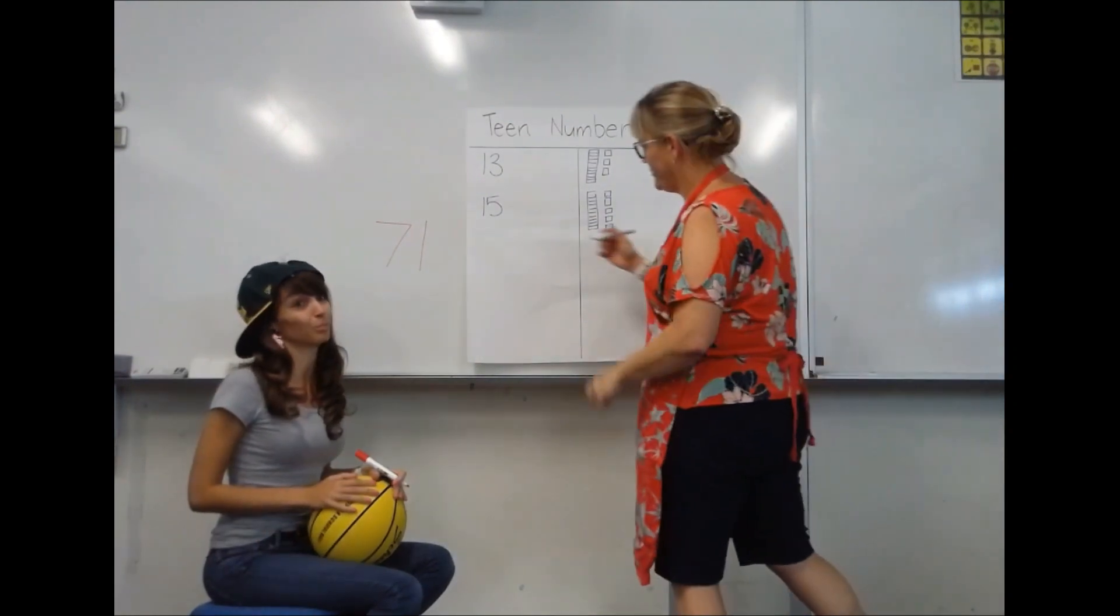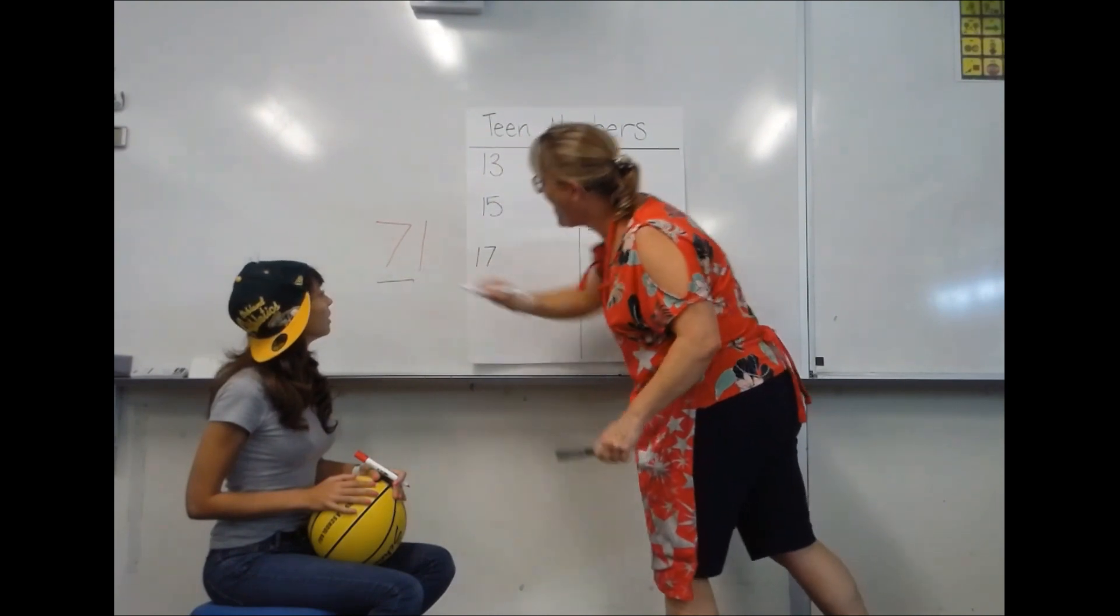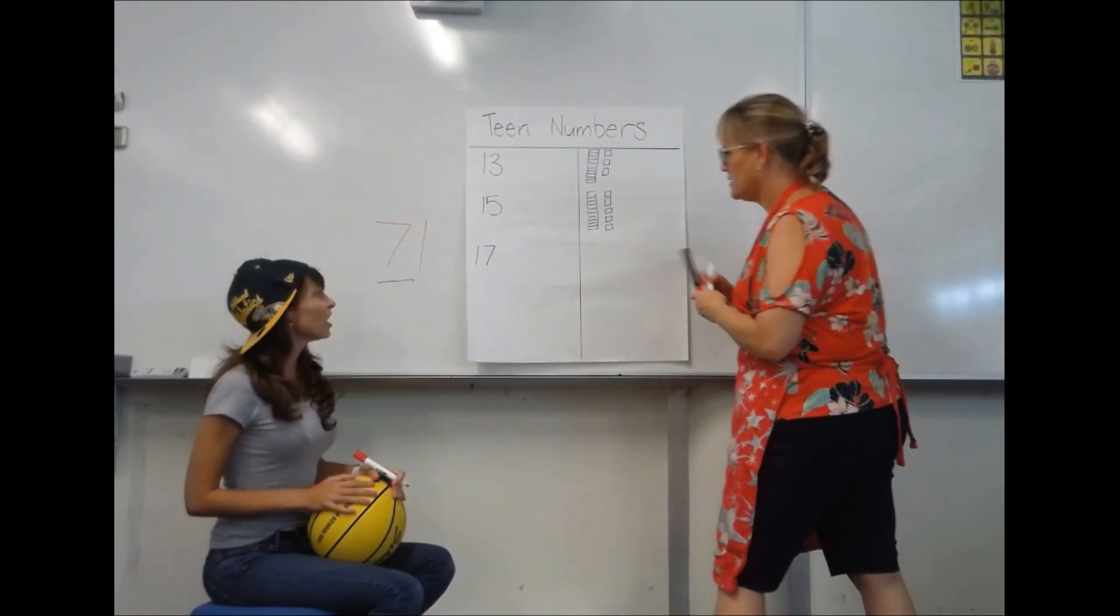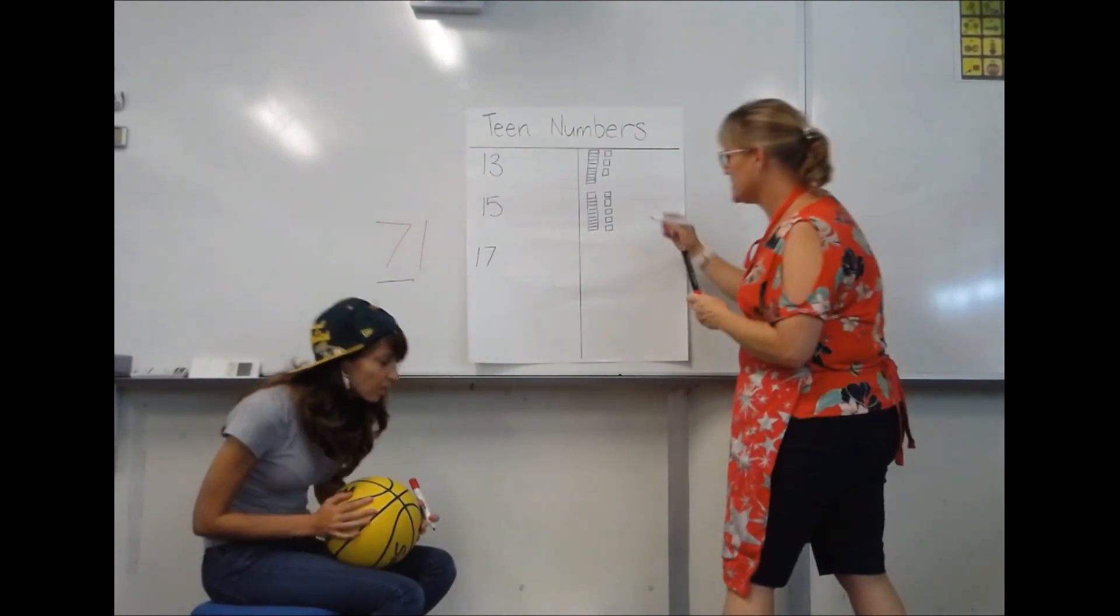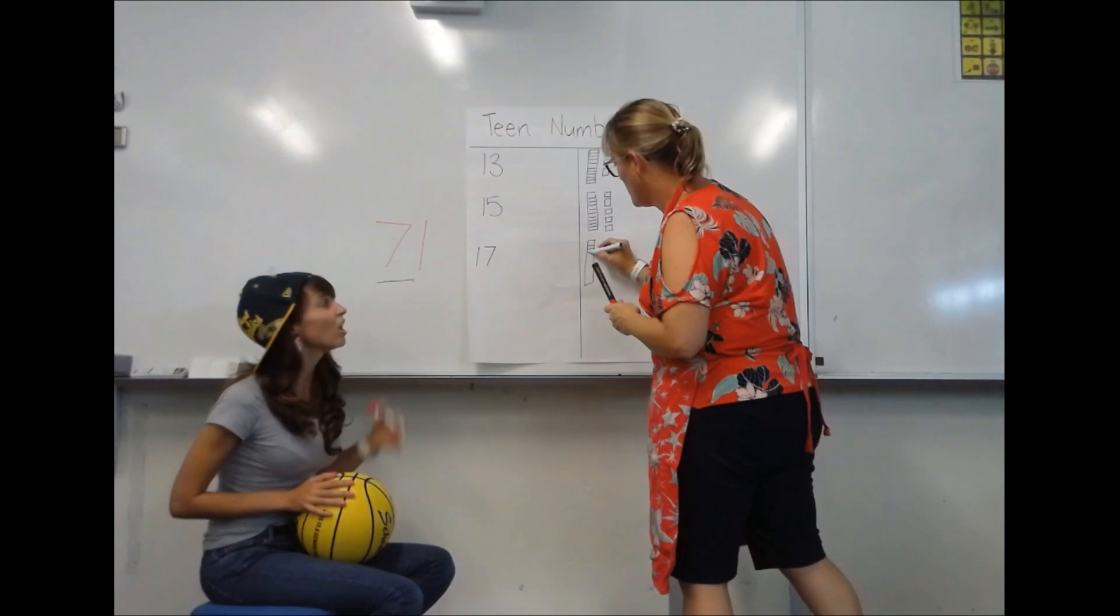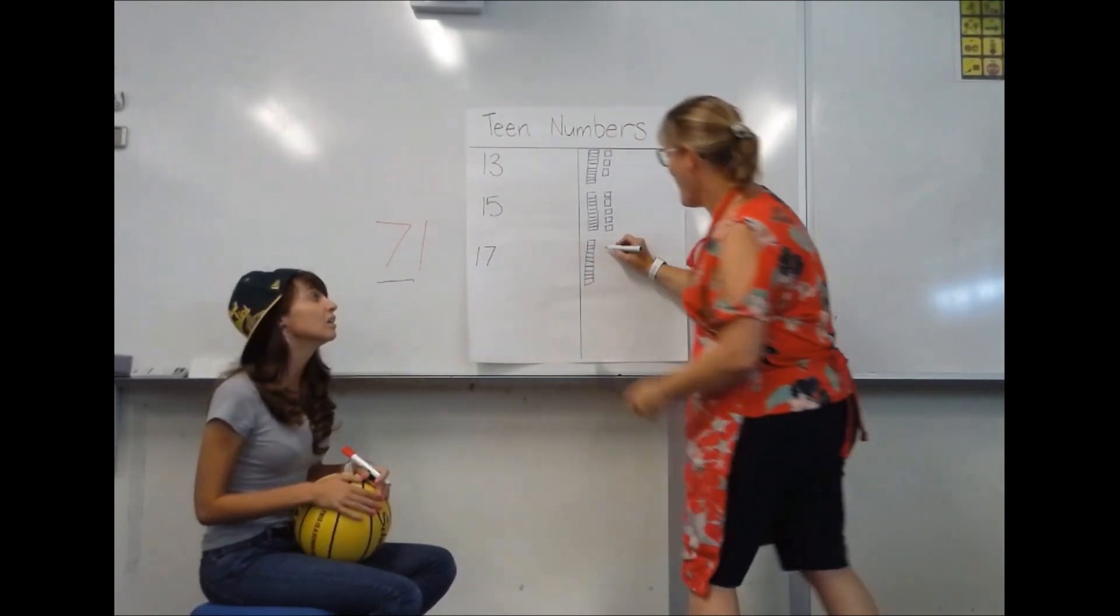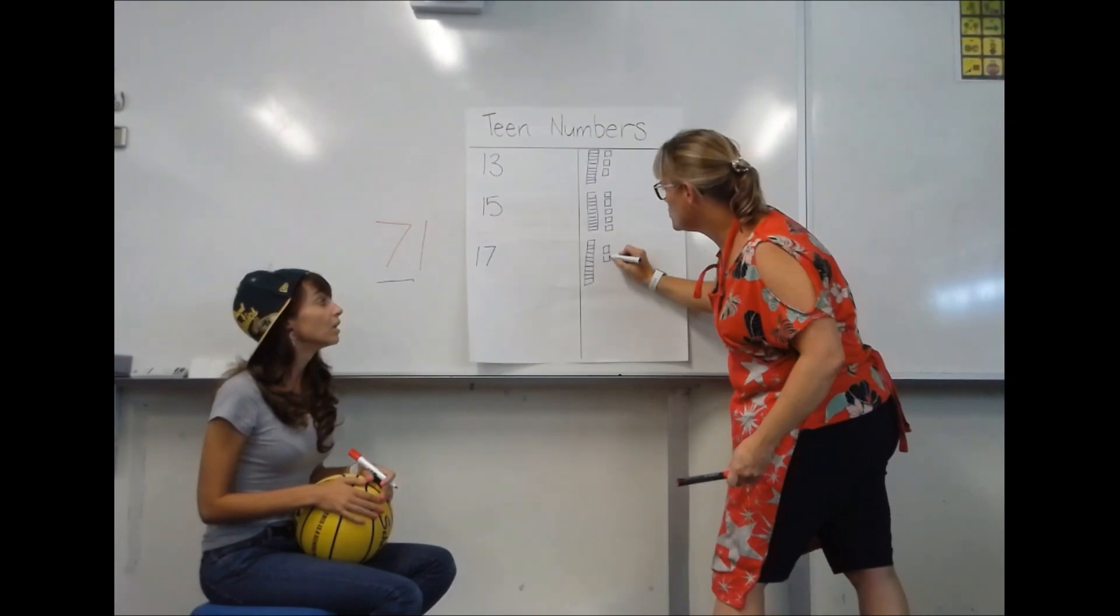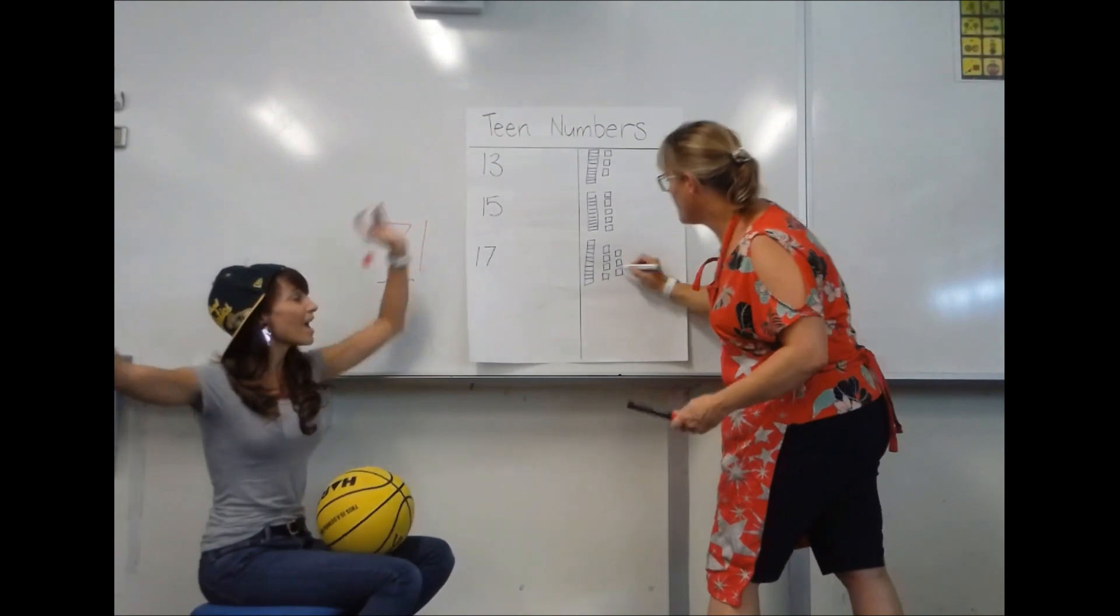No. You don't need to play basketball. You need to do your numbers. You have written 71. Bossy teen in the front, then seven ones. Show me what that looks like. Teen comes first. And then seven. One, two, three, four, five, six, seven.